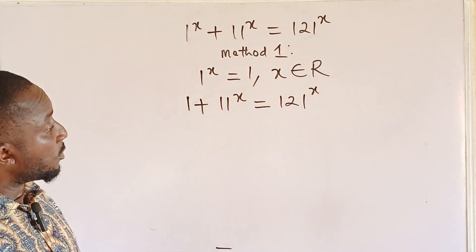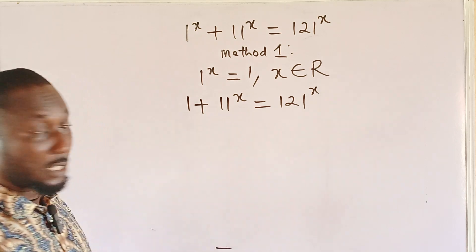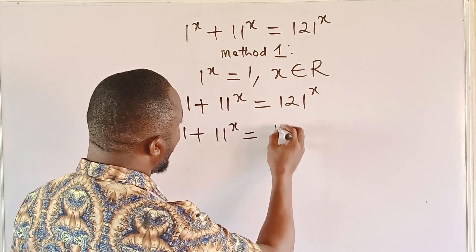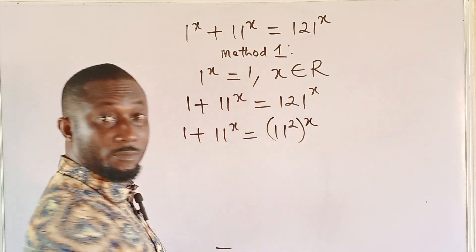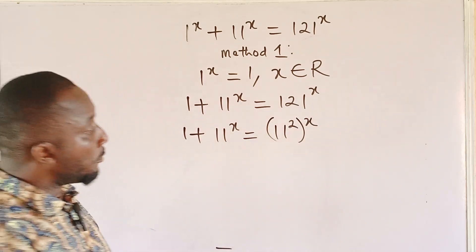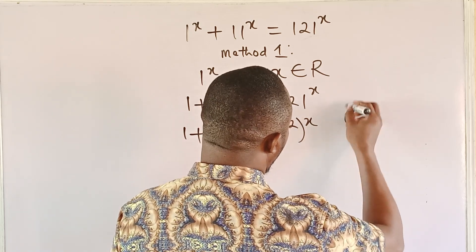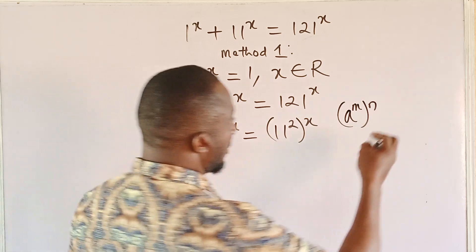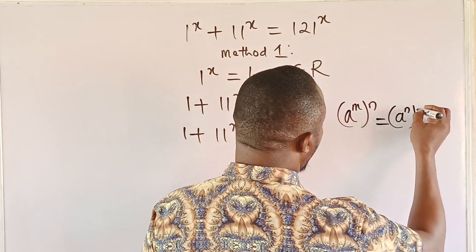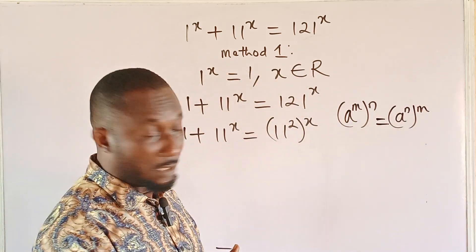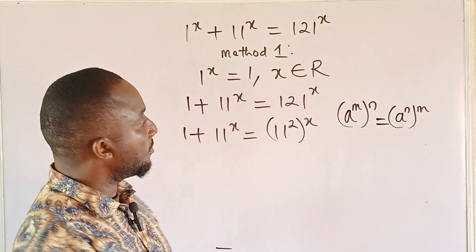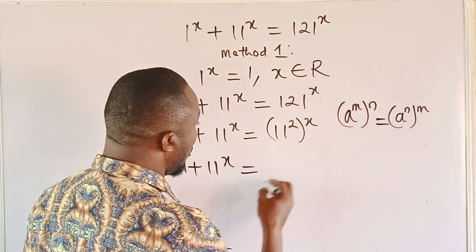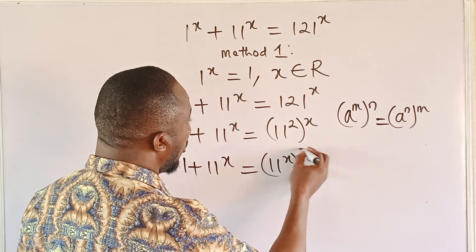Then again, 121 is 11 squared, so that's why this first method is quite simple. We can then write 1 plus 11^x equal to (11²)^x. From the property of exponents, if we have (a^m)^n, we can switch the position of the exponents to get (a^n)^m — just a simple commutation. So we can write this as 1 plus 11^x equal to (11^x) whole squared.